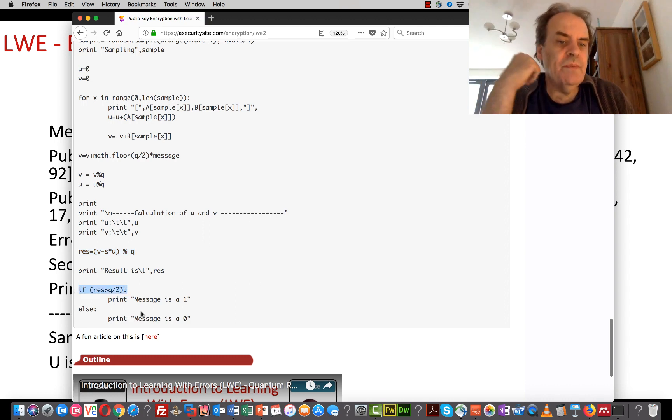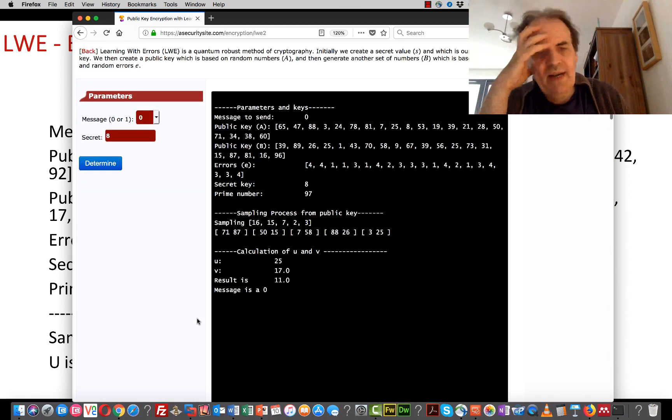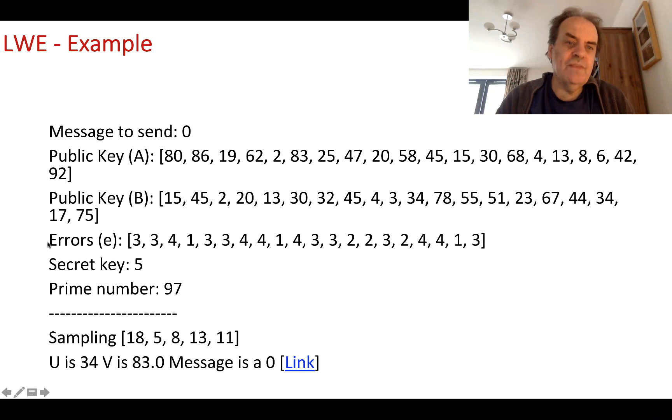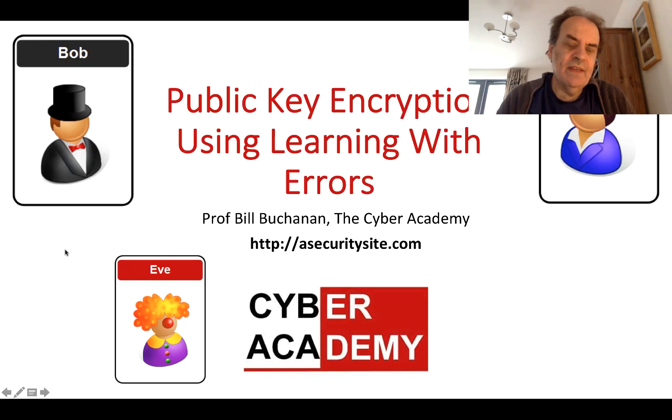Then we determine the result. As I said, if it's less than Q upon 2, then it's a 0. If it's greater than Q upon 2, it's a 1. This has been a basic introduction to Learning With Errors.